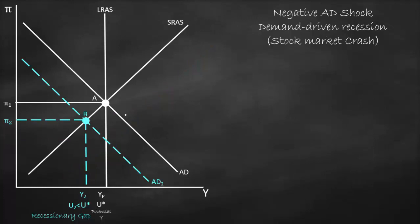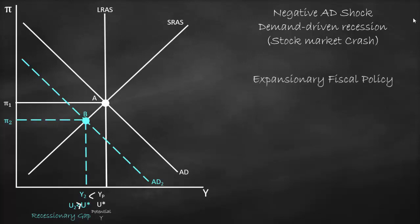In the second scenario, we again have a negative demand shock — aggregate demand shifts left and we have a recessionary gap where output is below potential and unemployment exceeds the natural rate. If we use an expansionary fiscal policy — higher government spending or lower taxes — aggregate demand will increase and shift back to the right to its original position. This returns us to point A, full employment output, potential output, and our original inflation level one.